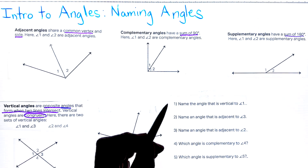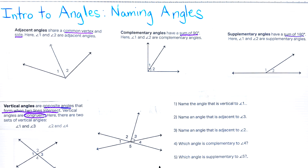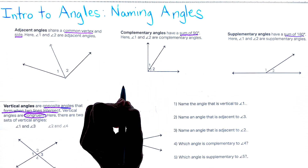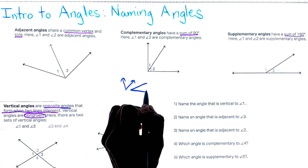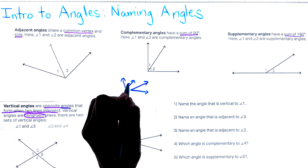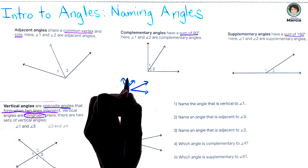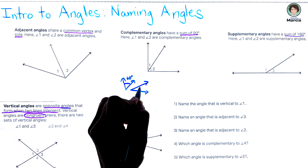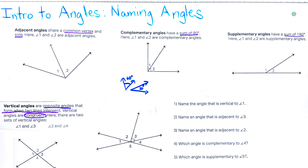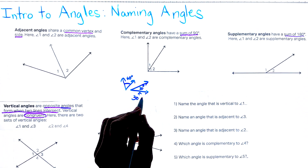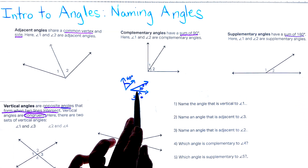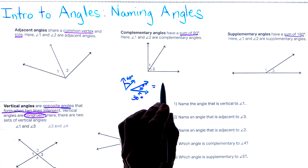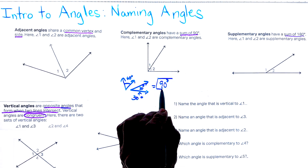They're actually complementary adjacent angles — we could name them with both of those names. You can also have complementary angles that are not adjacent. I'm going to mark one as 60 degrees and this one as 30 degrees. The angles do not have to be adjacent; as long as the two angles equal 90 degrees, we know that they are complementary.